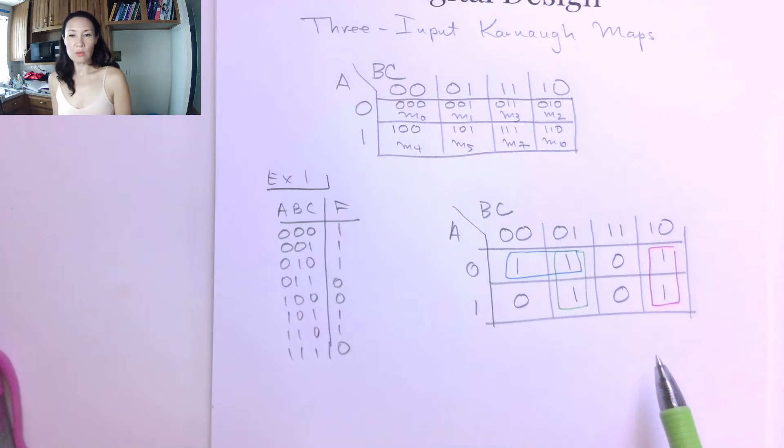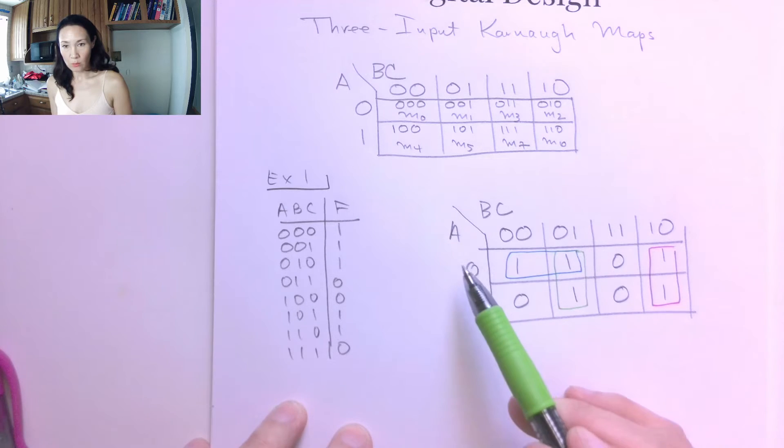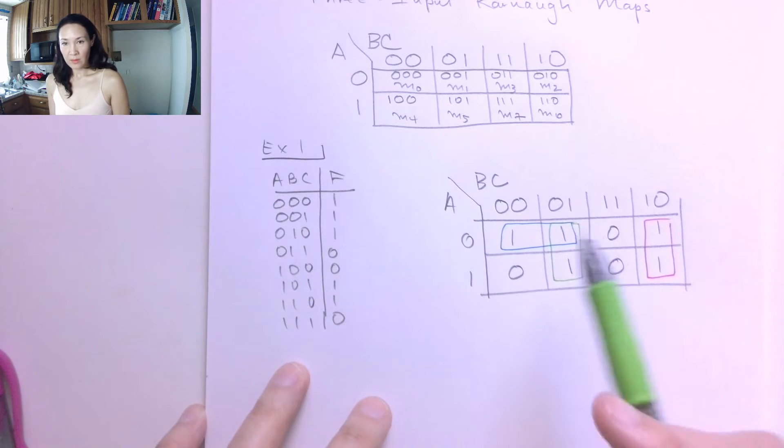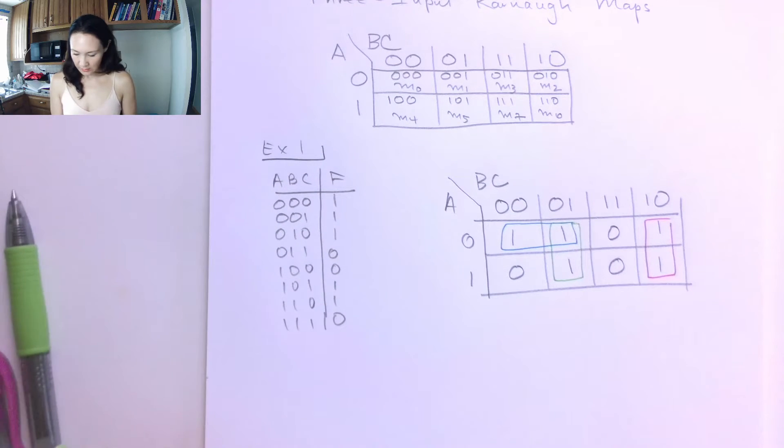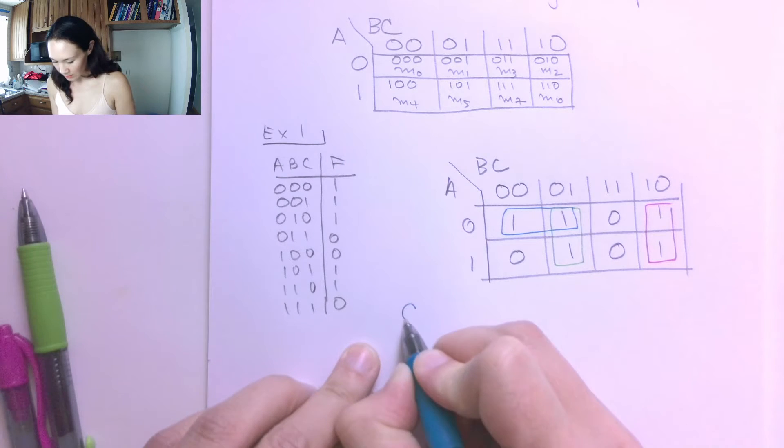So you always want to make a group if you can even if one of the bits have already been grouped with something else. And the reason why is every time you do a grouping that's going to reduce the number of literals in your sum of products form. So here's a pretty good grouping. There's different ways you can do this. Like I said, you can do wraparound grouping where you group this bit with that bit and you'll get a different result. But this is going to be my choice.